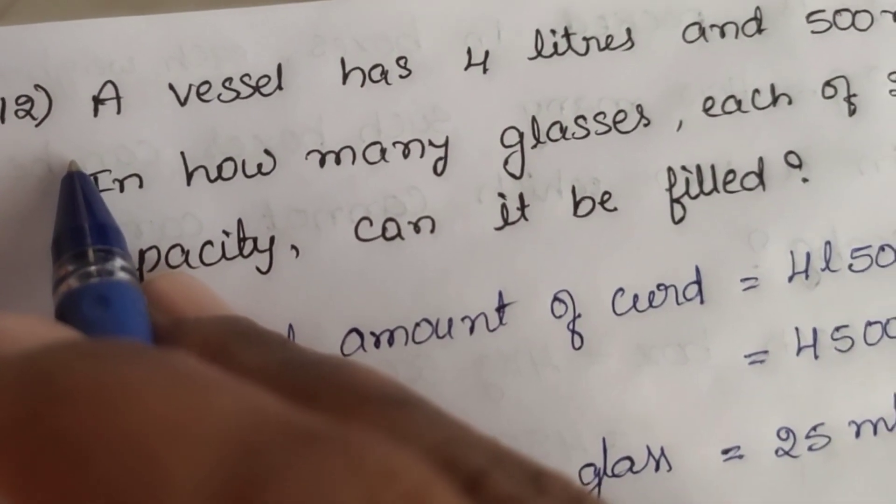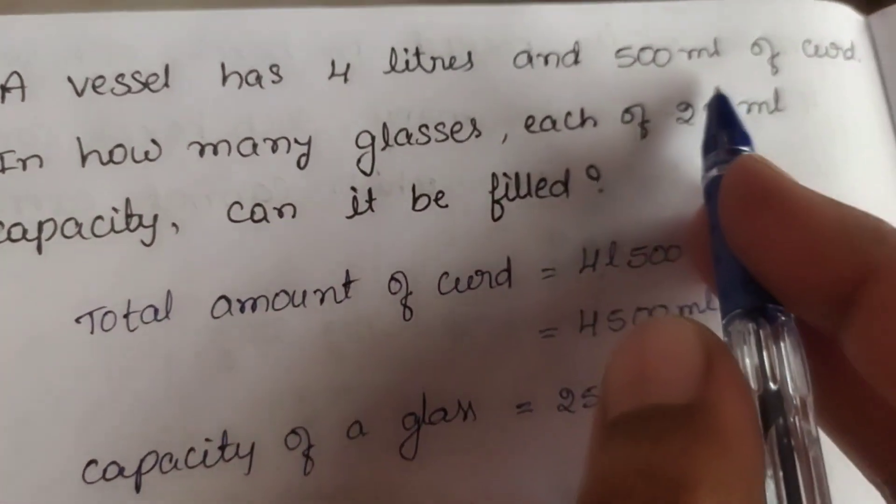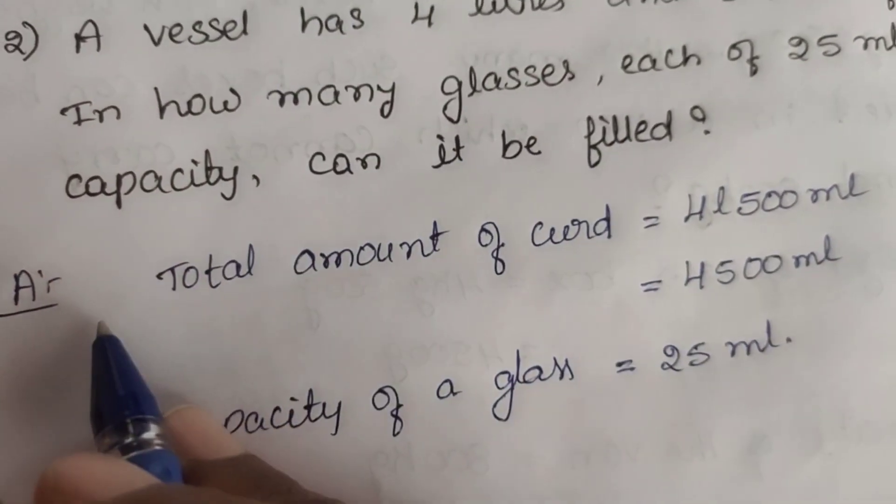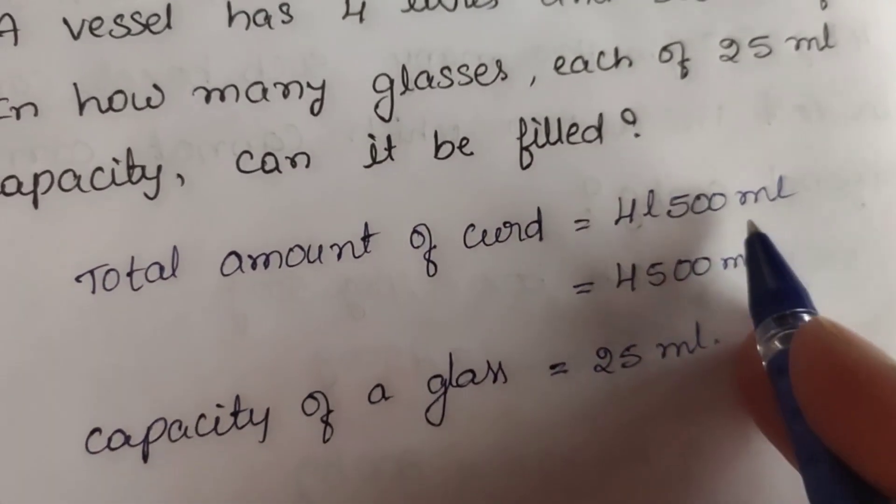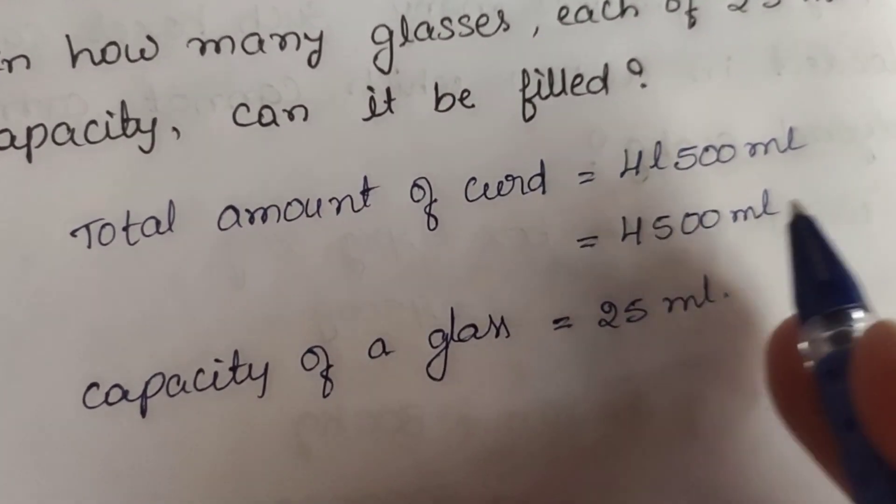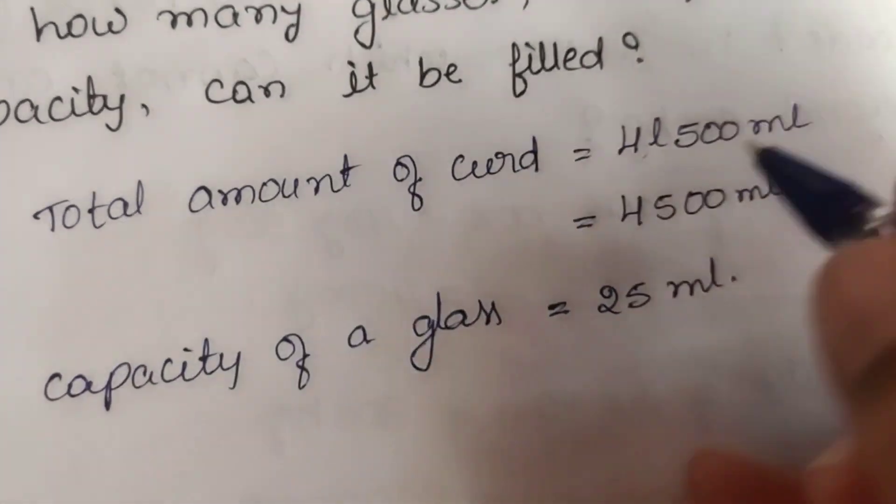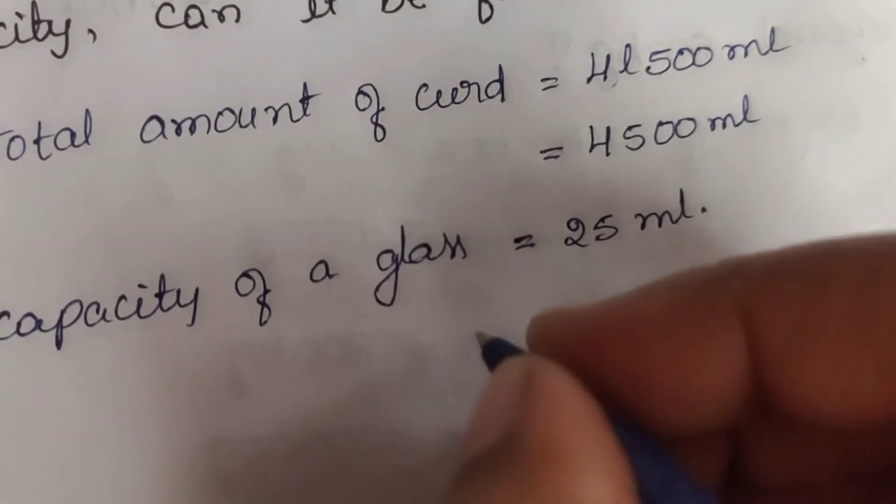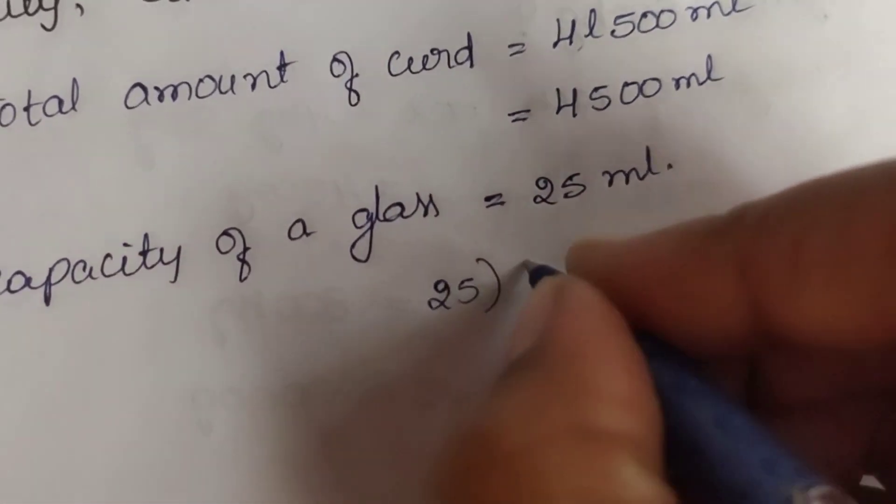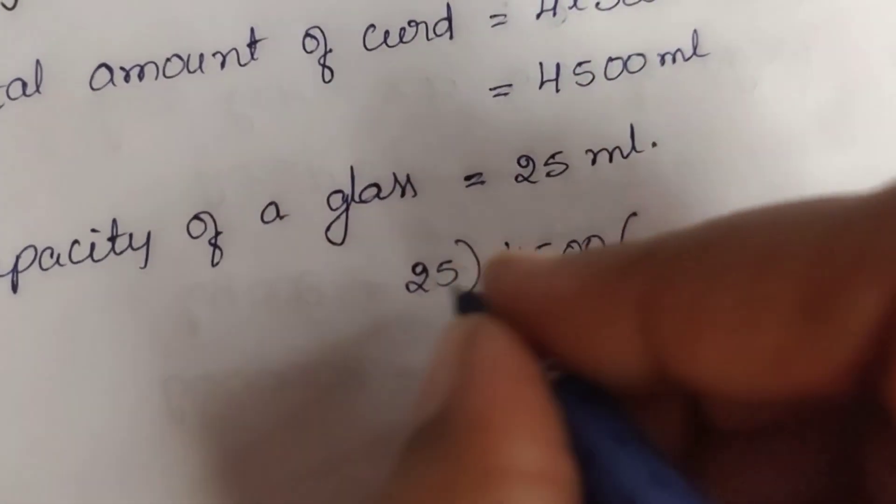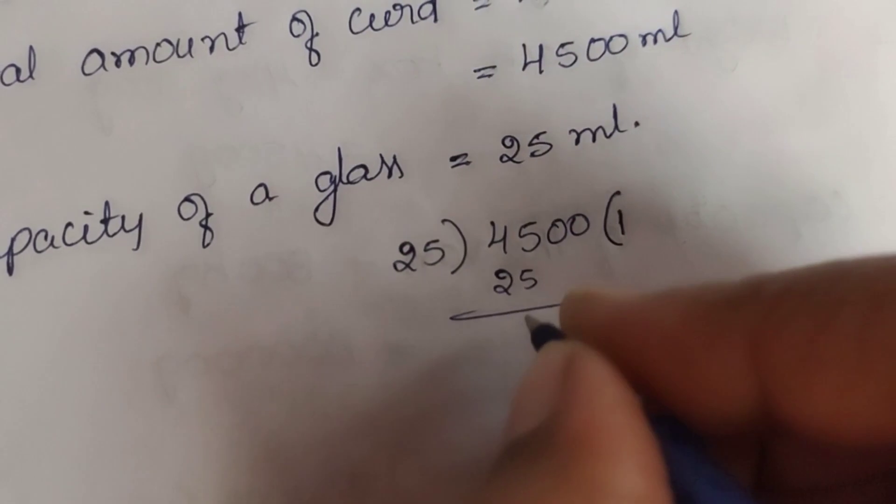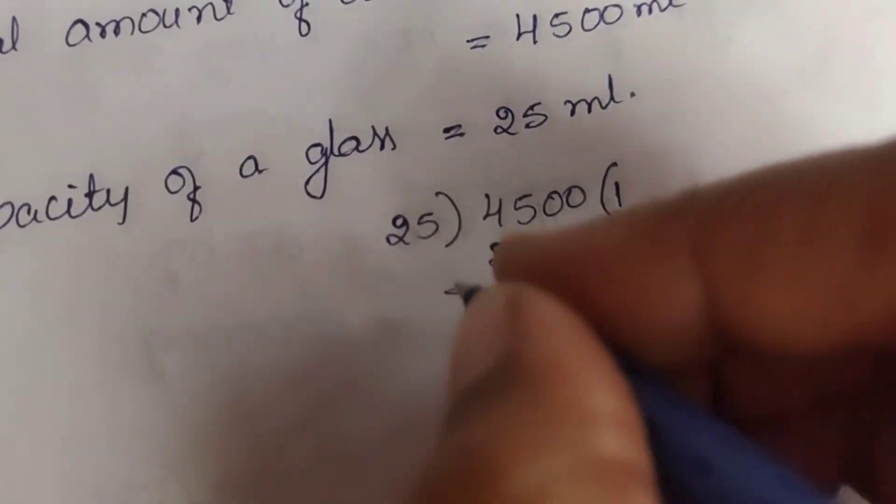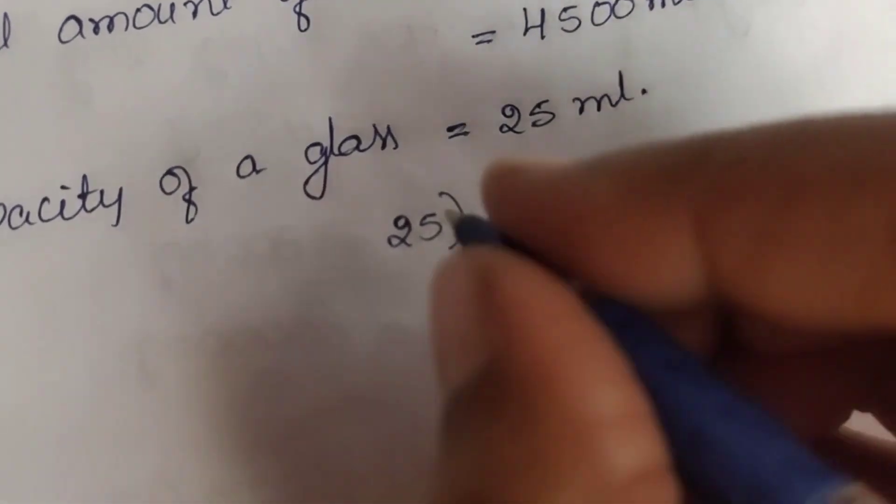Question 12, the last question of this exercise: A vessel has 4 liters and 500 ml of curd. In how many glasses, each of 25 ml capacity, can it be filled? Answer: Total amount of curd is equal to 4 liters 500 ml, which is 4,500 ml. Capacity of a glass is 25 ml. So we divide 4,500 by 25. 5 minus 5 is 0, 4 minus 2 is 2.